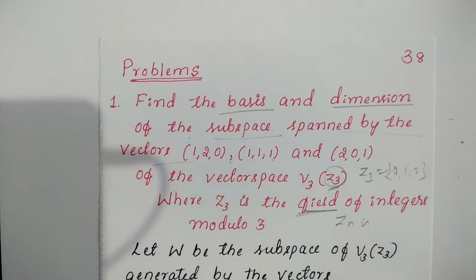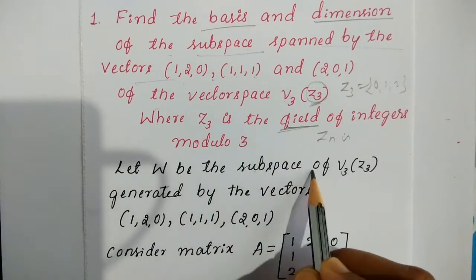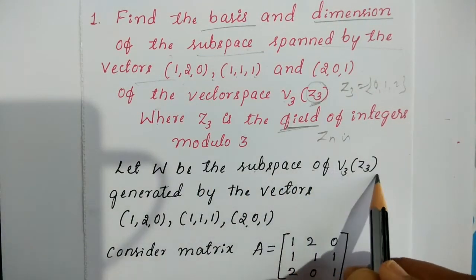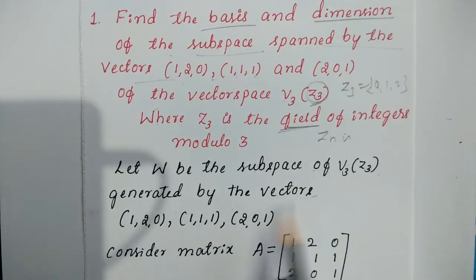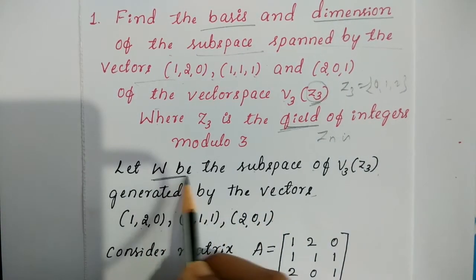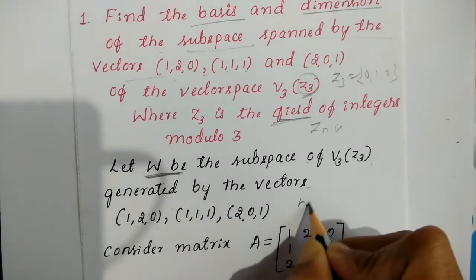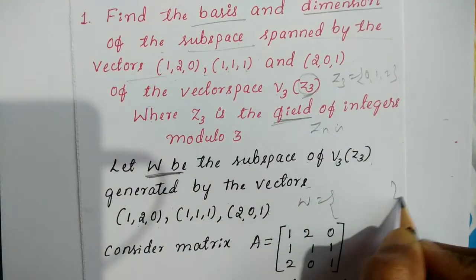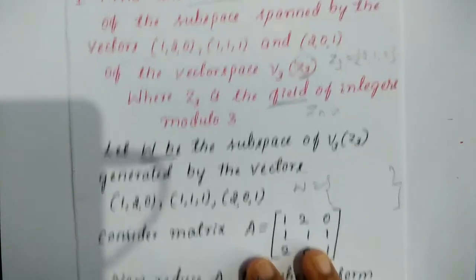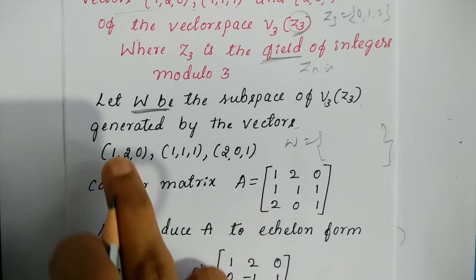Solution: Let W be the subspace of V3 of Z3 generated by the vectors (1,2,0), (1,1,1), and (2,0,1). Consider the matrix A formed by taking these vectors row-wise: first row 1,2,0; second row 1,1,1; third row 2,0,1.